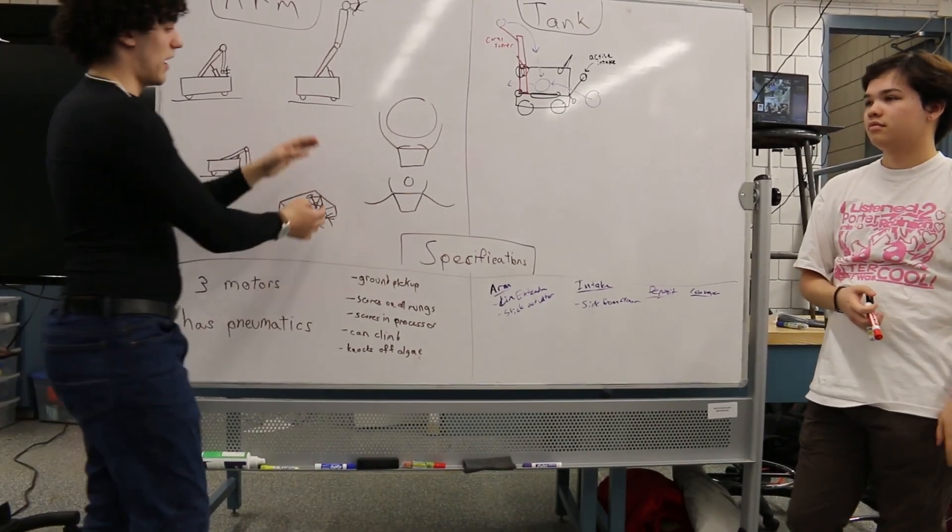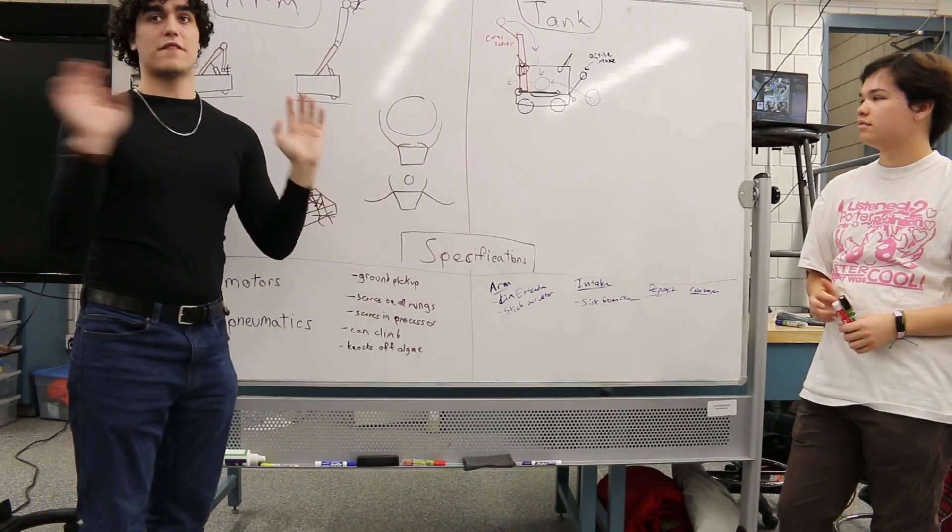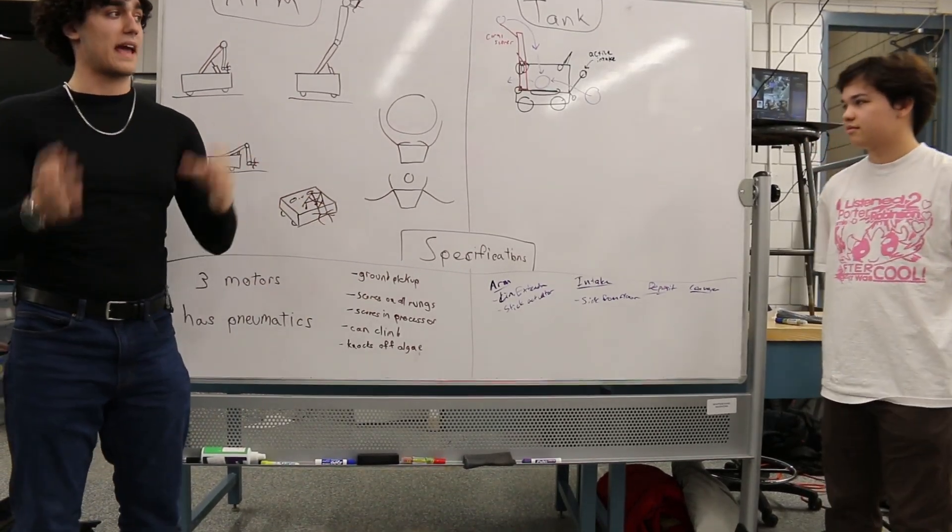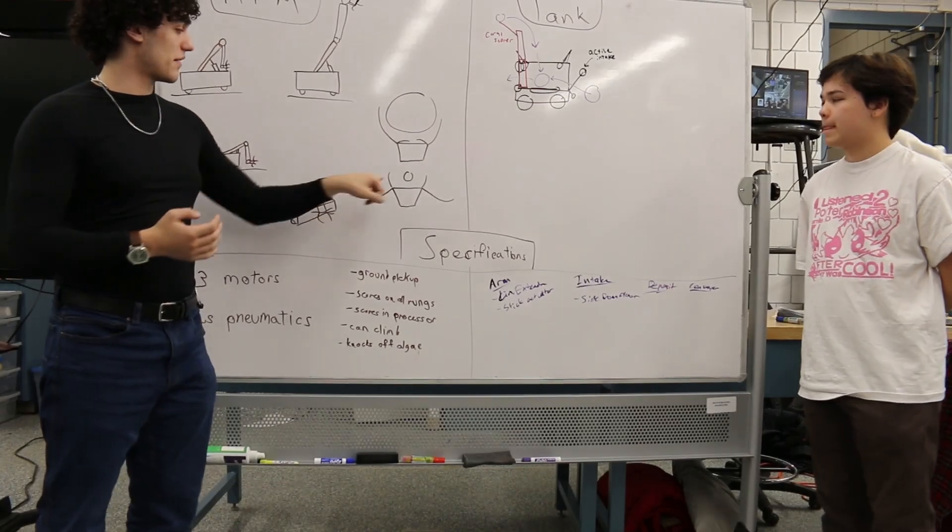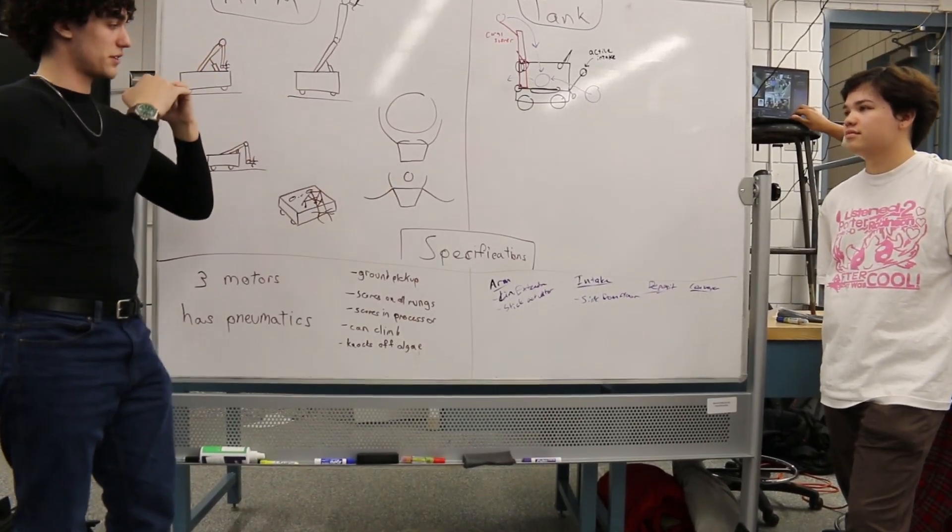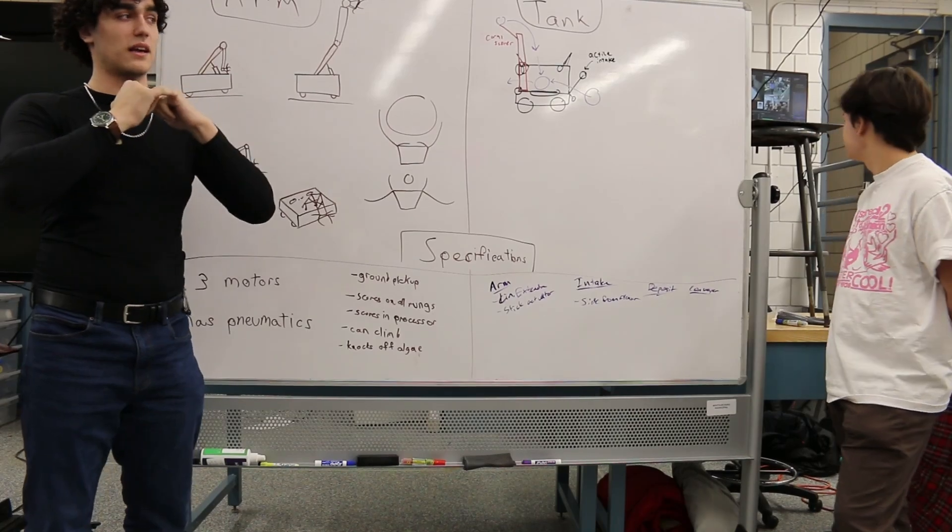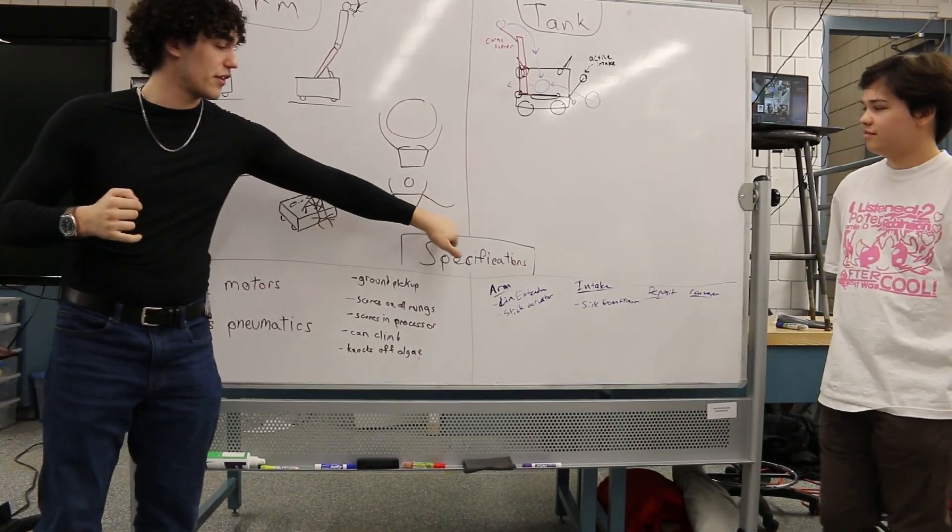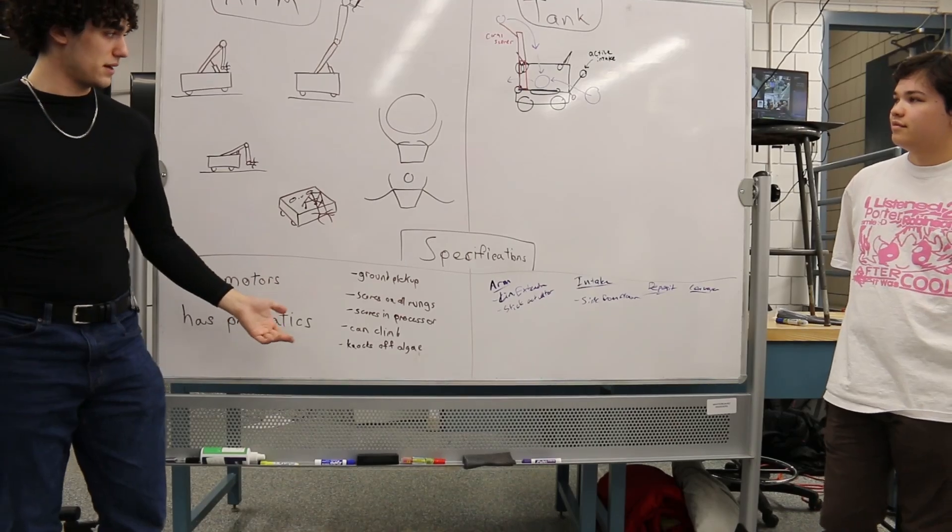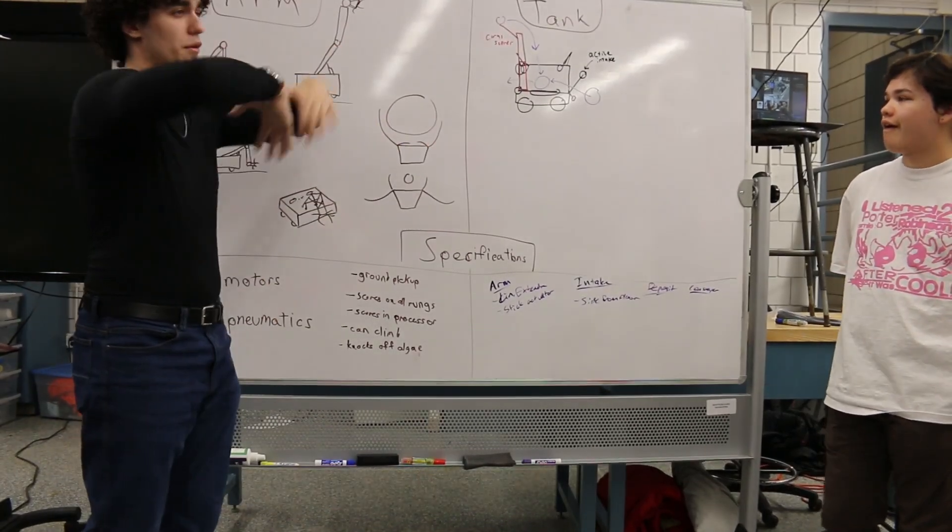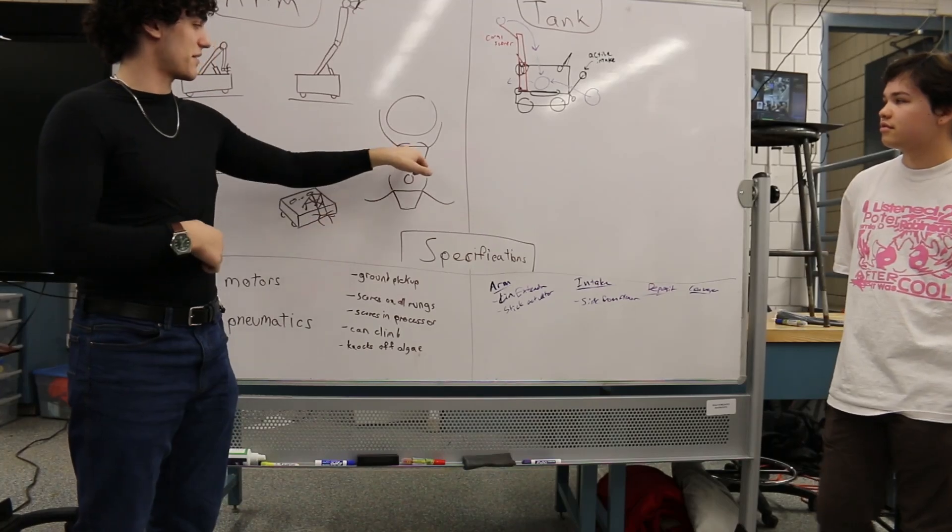Okay, so to the claw. The claw has four main mandrels that it uses to pick up both the coral and the algae. So it has smaller mandrels that are able to close collectively around the coral. And then the larger mandrels are kind of backwards on the outside.